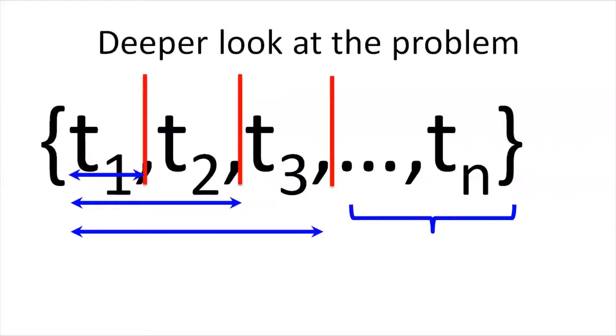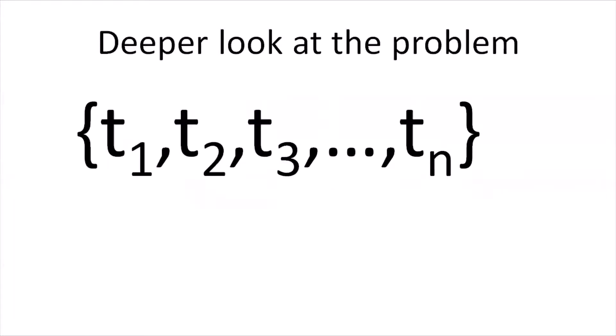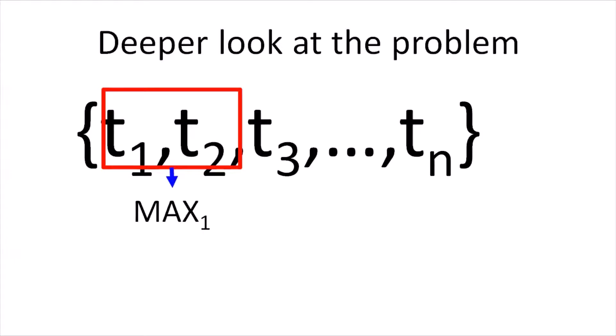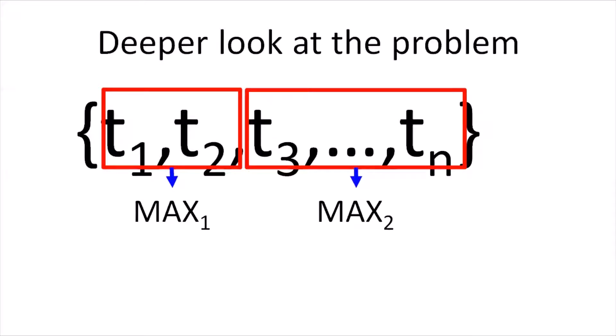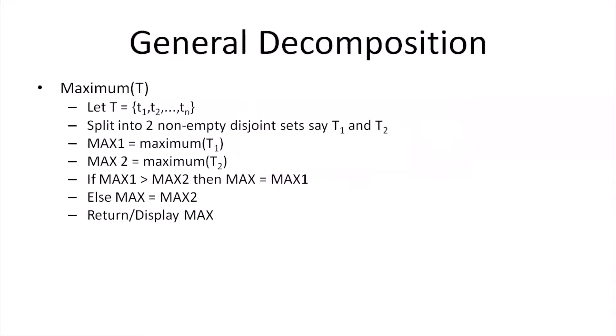This is a simple and trivial problem, and once we know this approach, we may start thinking whether there exists any other decomposition method. As shown in the figure, let us compare t1 and t2 and store the maximum of the two as max1. Then compare the rest of the elements in a similar independent fashion to get max2. We can then get the solution by simply comparing max1 and max2. The algorithm for this method shows that the previous algorithm is actually a special case of this one.